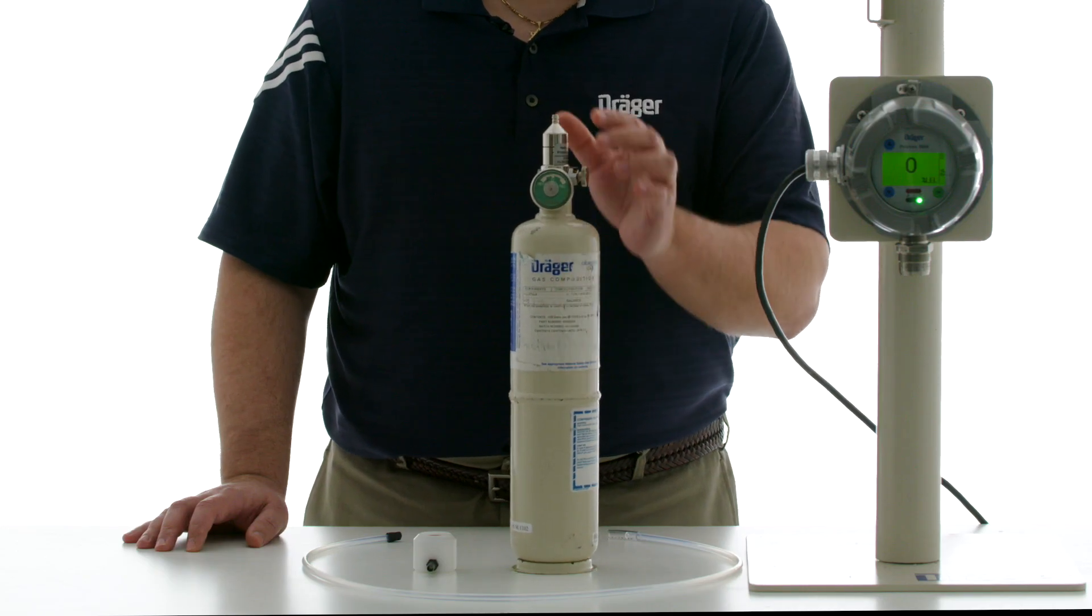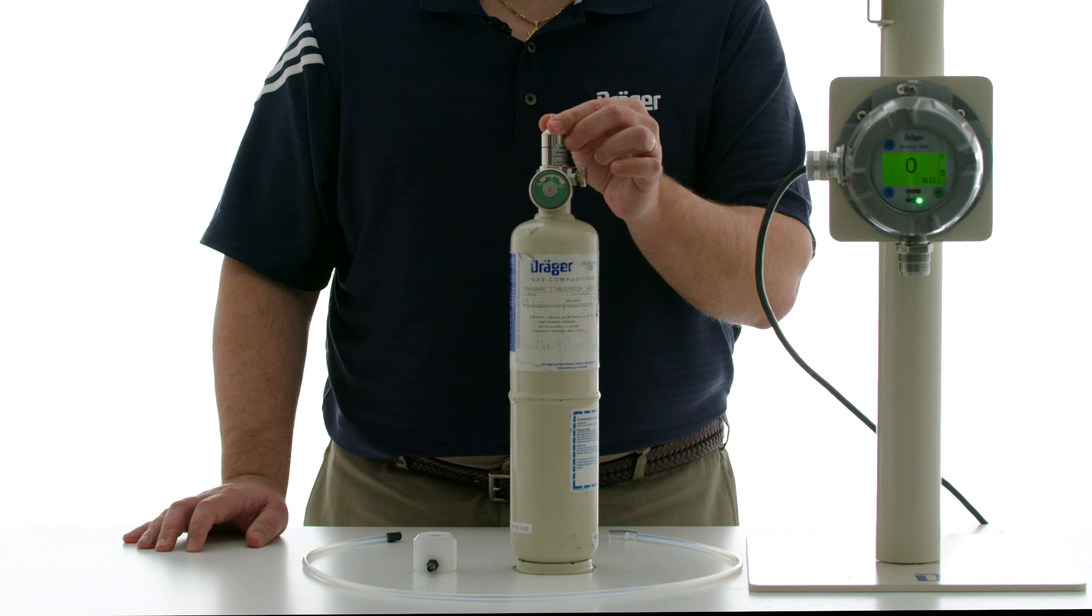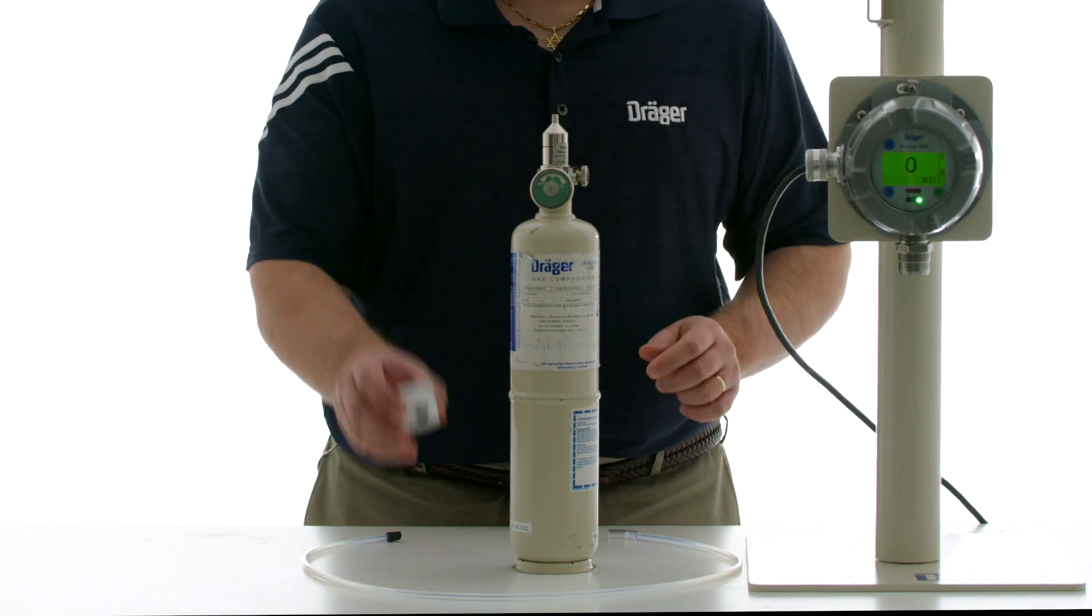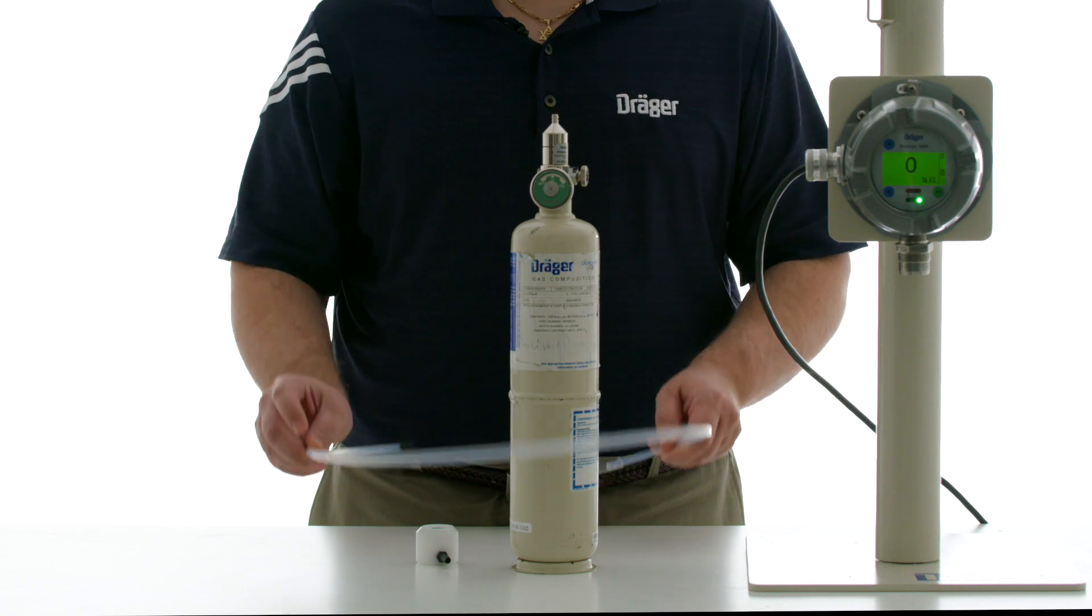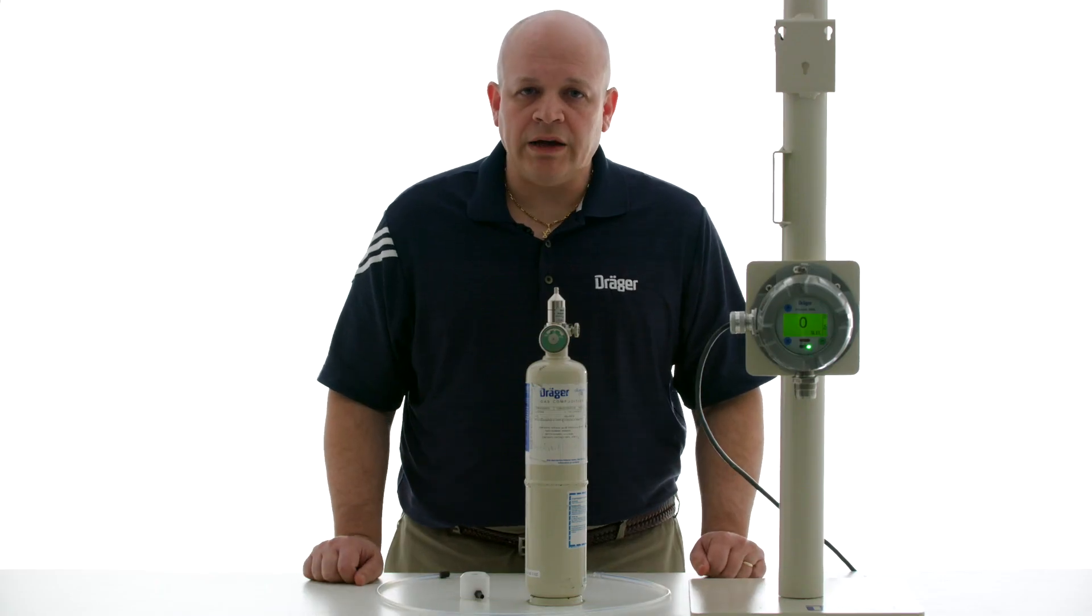So we have our cylinder, we have our 0.5 liter per minute regulator, we have our calibration adapter, and our tubing. Also before proceeding please consult the user manual.